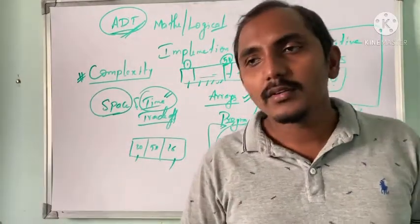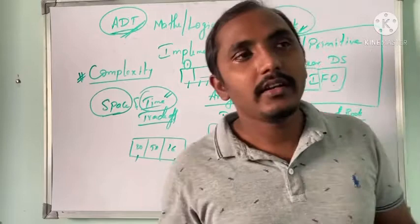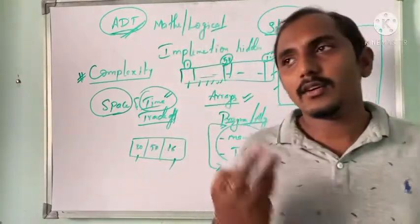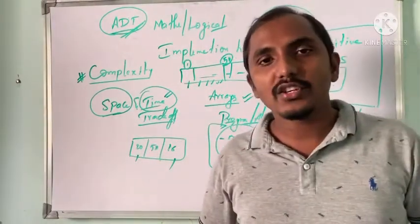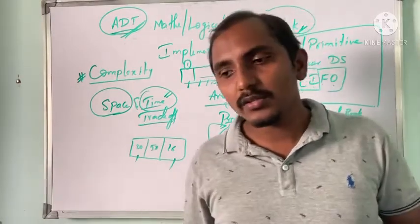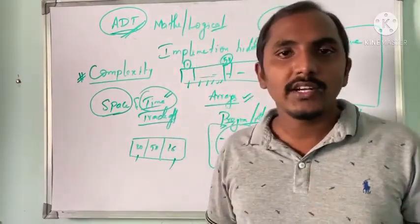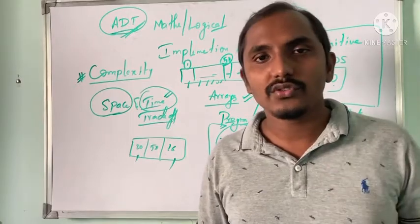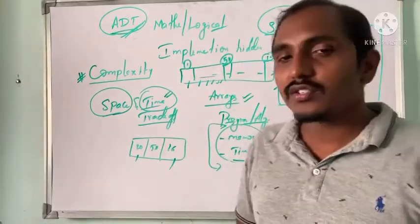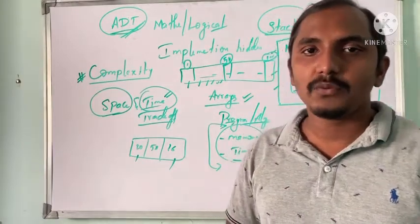This completes your first chapter of data structures, where we have discussed several definitions and concepts such as organization of data structures and operations of data structures. From this chapter there are two important topics: one is organization of data structure and the other is operations of data structure. Hope this is clear, and in the next session we are going to start with our second chapter. Thank you.